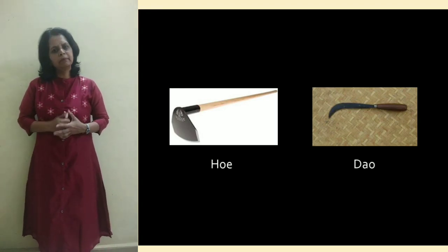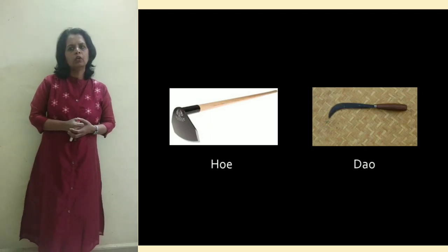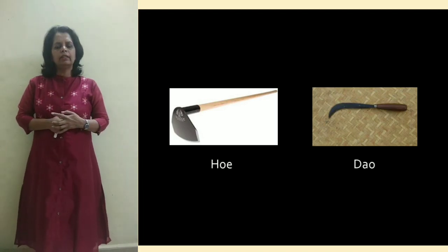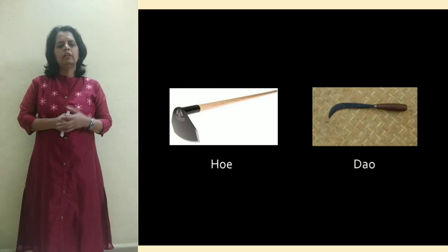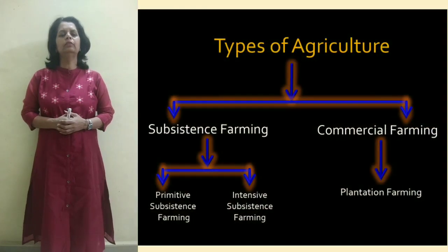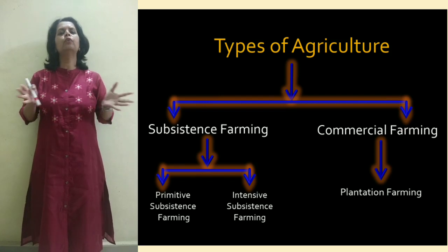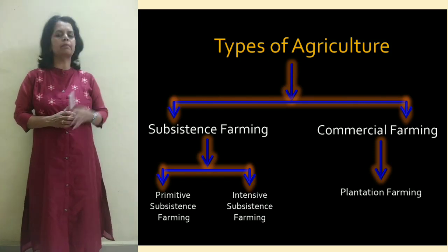During the primitive time, agriculture was practiced using old tools and equipment — like hoe and dowel. Apart from that, these activities were done basically with the help of family members themselves. Hardly any manuals and fertilizers were being used. Now, subsistence farming is divided into two categories: one is primitive subsistence farming, and another is intensive subsistence farming.